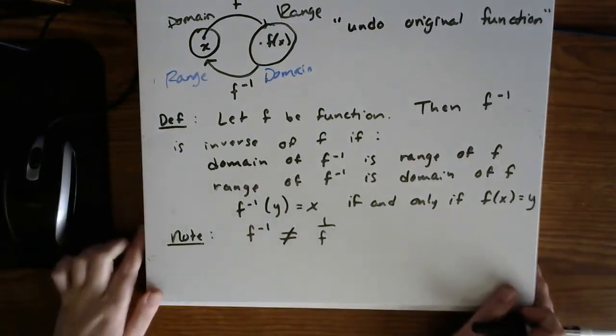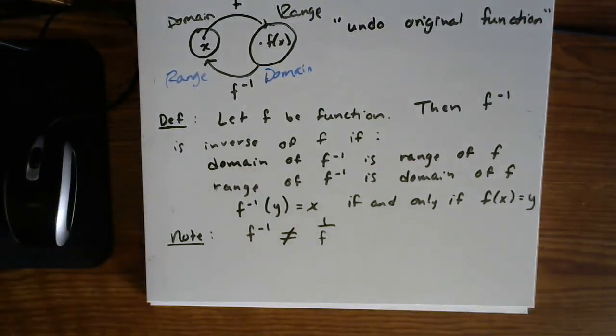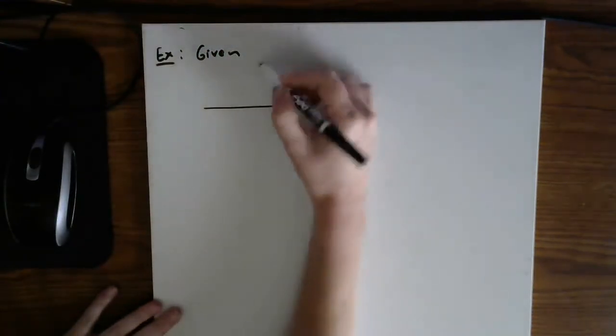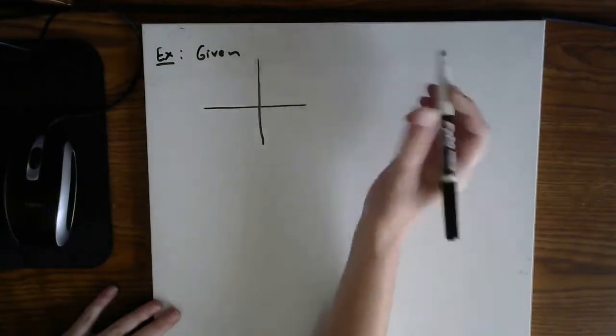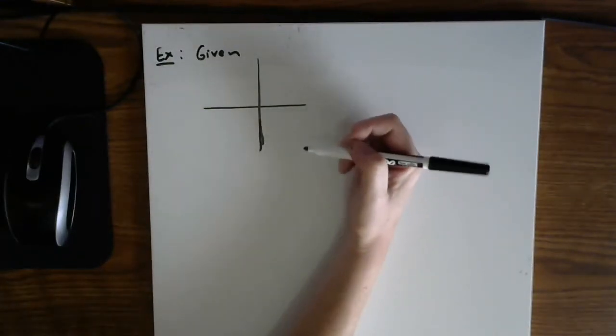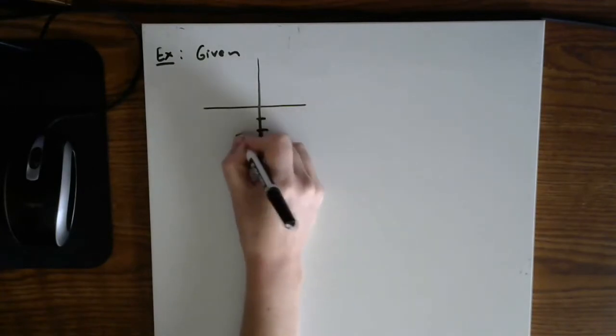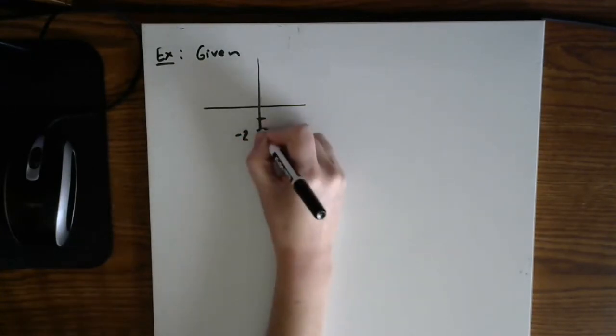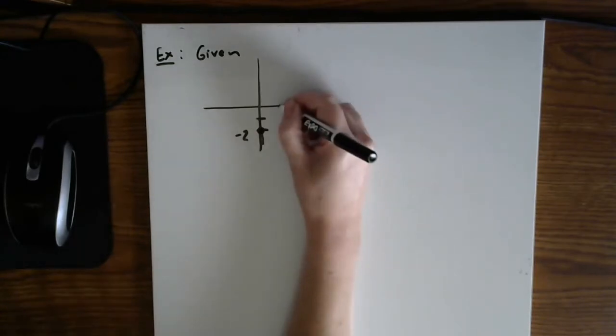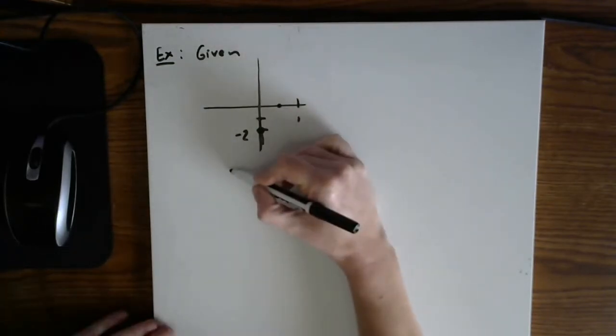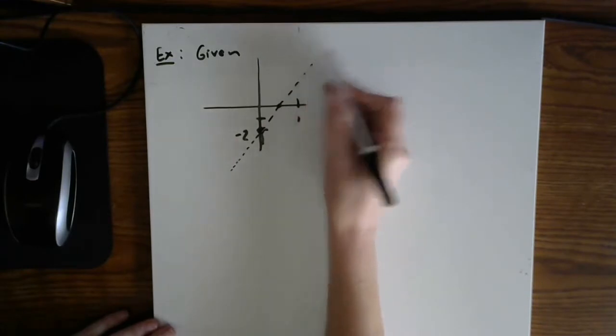So I think it is worthwhile for us to maybe look at just a quick sketch here that I have put together. So for my little sketch, I'm just going to try to draw this by hand. Let's say that we are given the following graph. So let's make the original function f of x go through and have a y-intercept at negative two.